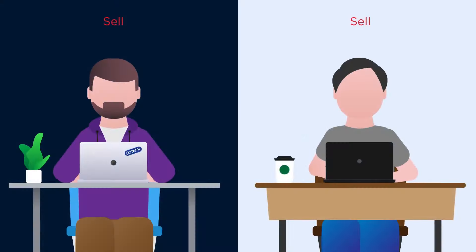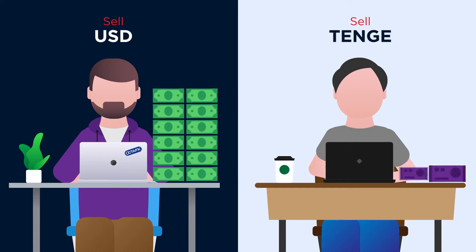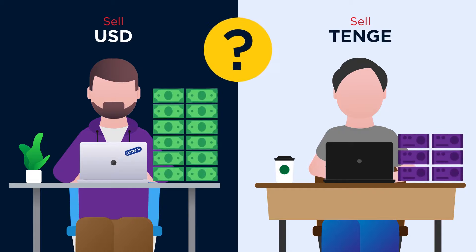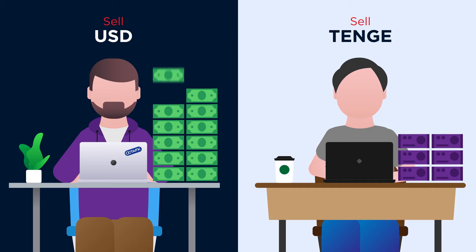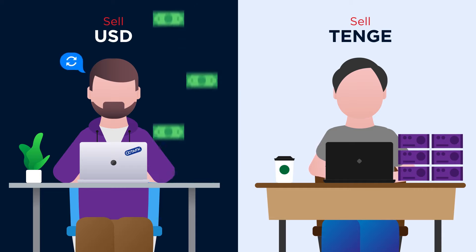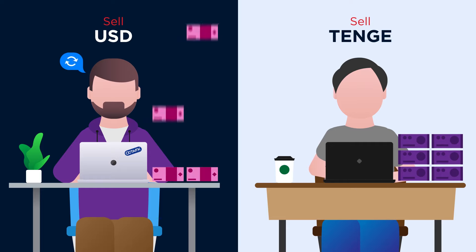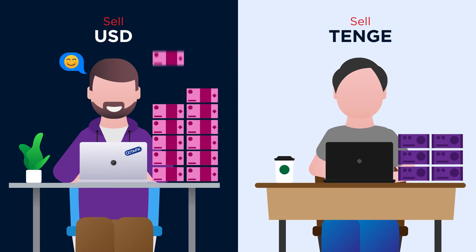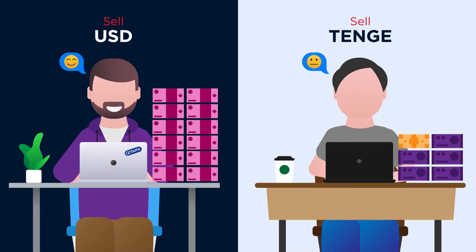Liquidity is the possibility to liquidate an asset quickly without affecting its price dramatically. Assume you hold two currencies: dollars and Tenge. Which one is more liquid? Which one will be sold faster? You'll surely find a buyer for a dollar immediately, as it's the most exchanged currency in the world. However, Tenge will stay with you for a while, until you find a buyer who needs such an exotic currency.